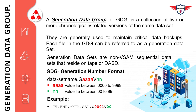The format is: data set name dot absolute number followed by a version number. The absolute generation number consists of four digits for the generation number and two digits for the version number. Because these numbers require nine characters including the period, the data set name of a generation data group is limited to 35 characters instead of 44. Here is an example: TT.EMPLOYEE.MONTHLY.SALARY followed by an absolute number and then a version number.